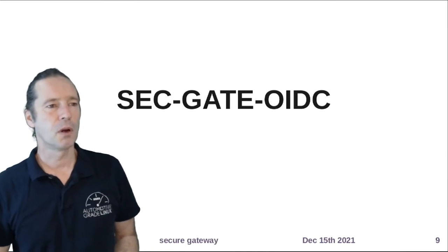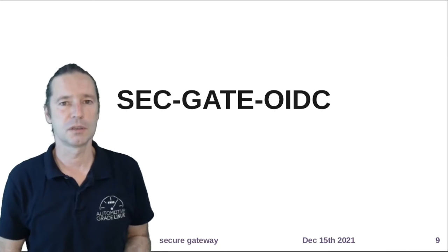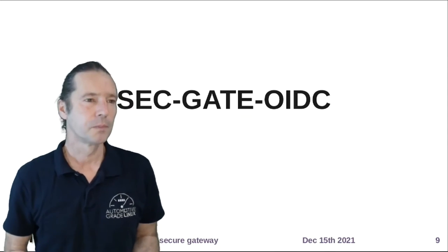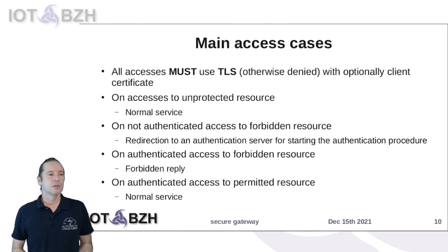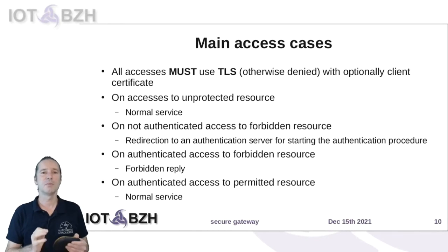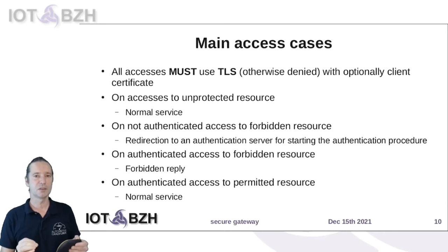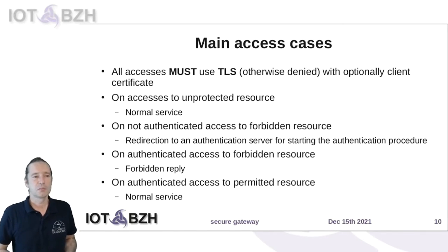We will now speak more precisely about the SecureGateway, how it works, and its mechanisms. The principles are that each access must use transport layer security — TLS — otherwise it is denied. That's imposed by the OAuth and OpenID protocols. You can optionally add a client certificate to increase trust. Unprotected resources are open and available normally.